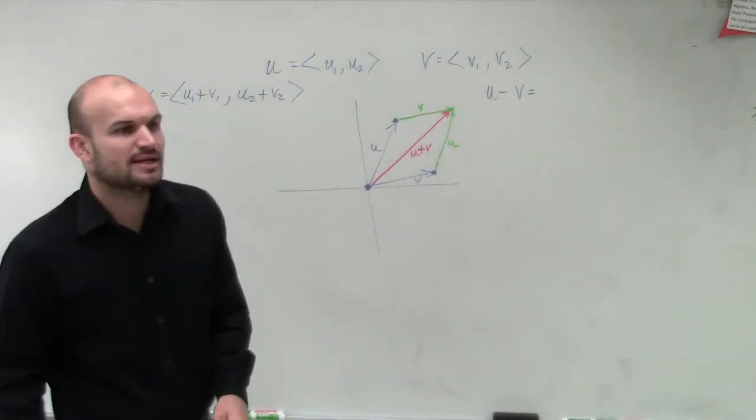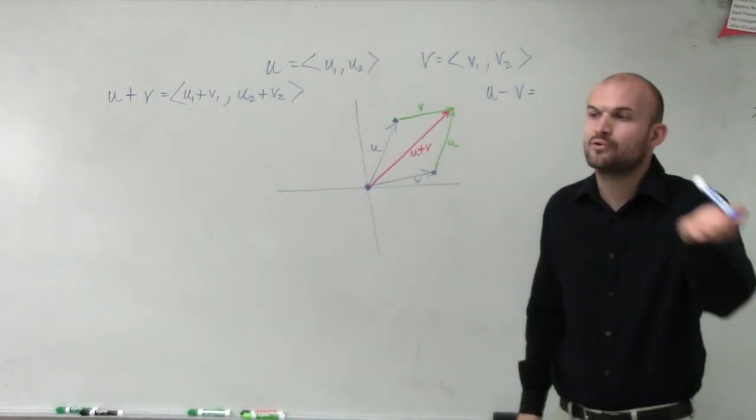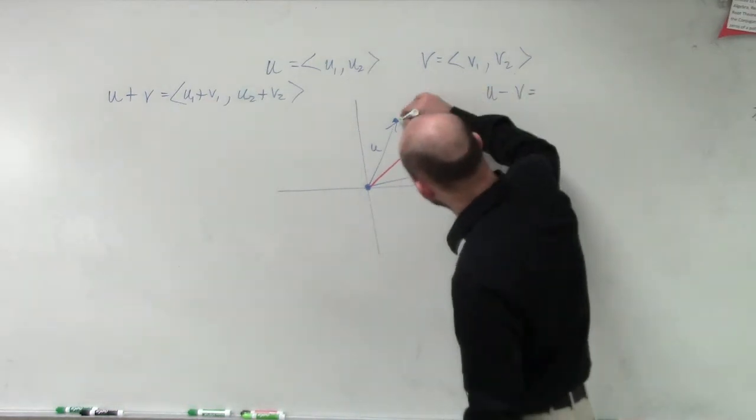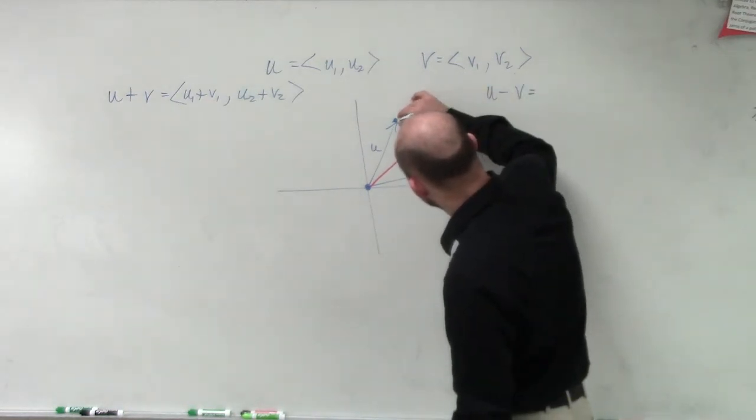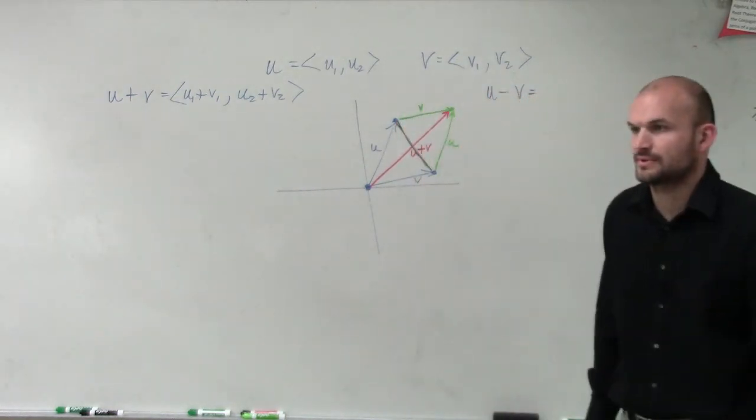But there's a couple of things. When we're looking at u minus v, now what we're going to do is rather than taking our initial side and put it at the end of our terminal side, now what we're going to be doing is looking at the difference between our two vectors.